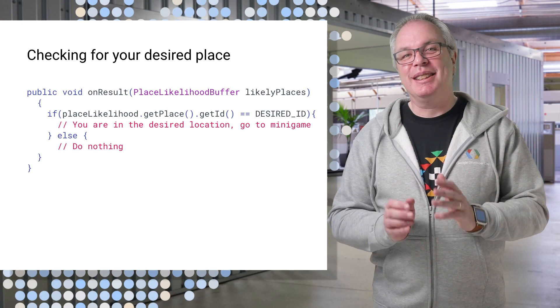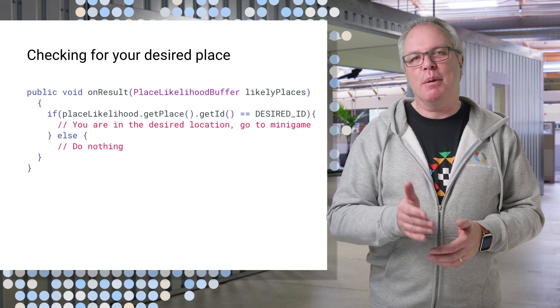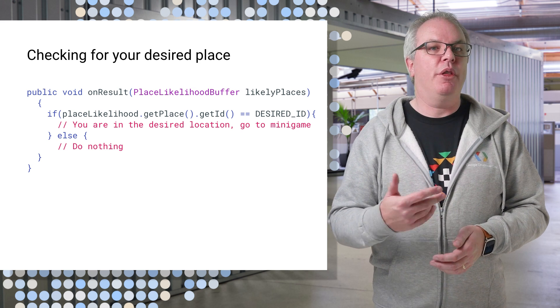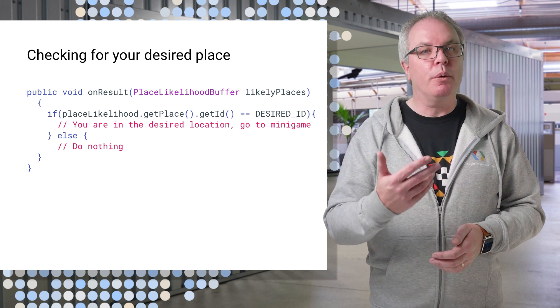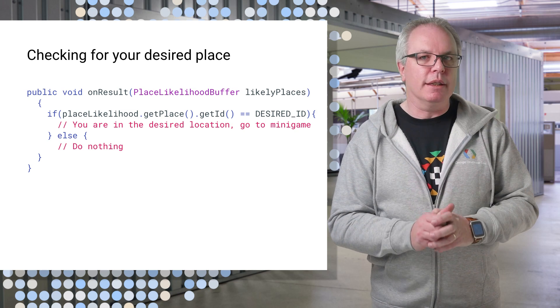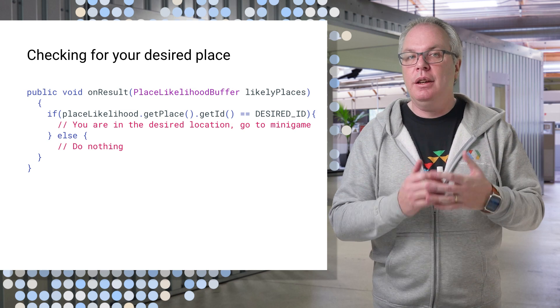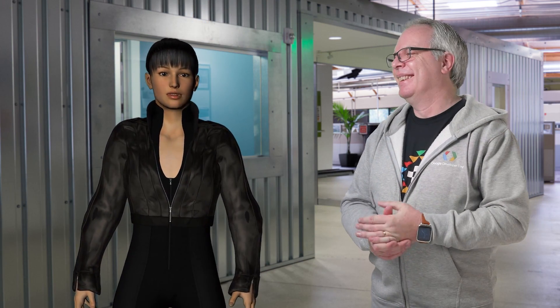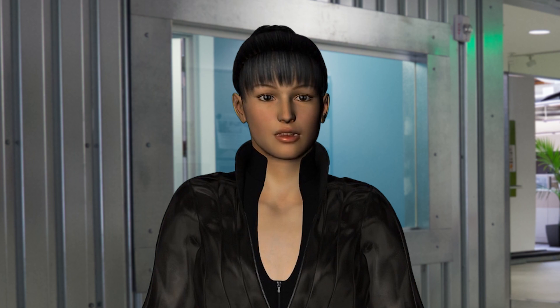This will come with a likelihood of which one you're in. All you have to do is look at this list and see if the place you are looking for is on it, and if the likelihood that you are there is above a reasonable threshold — say 60% or 0.6 in this case — then you can go on to the next part of the game. It's really that simple. If it were that simple, I wouldn't have been trapped in this parallel dimension! I guess I should have used the Places API instead of the Flux Capacitor.